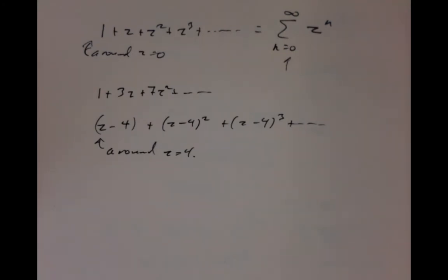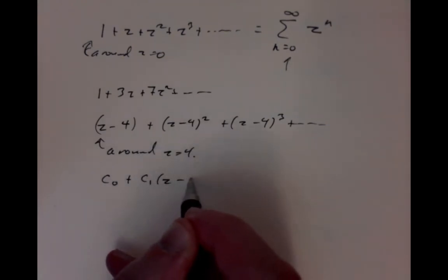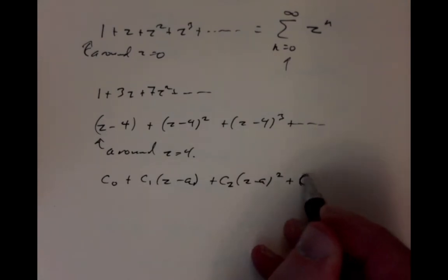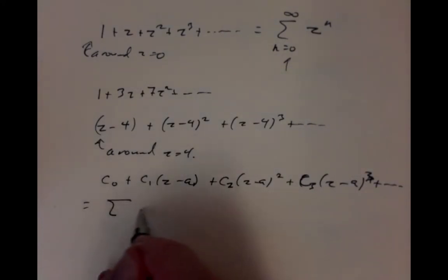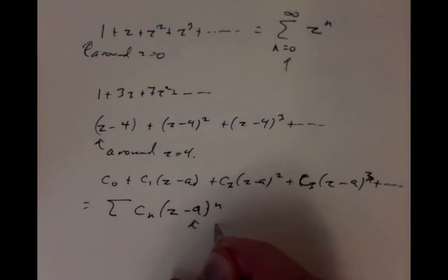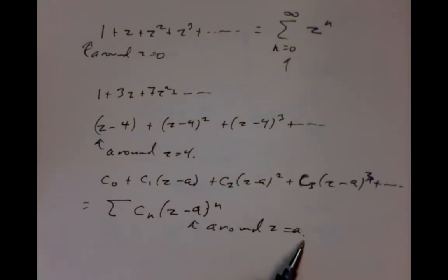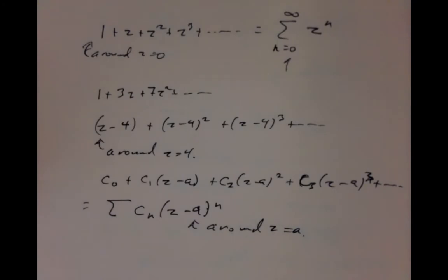In general, we're interested in sums that look like a constant term, a (z minus a) term, a (z minus a) squared term, a c3 times (z minus a) cubed term, and so on. That's expressed as a sum of coefficients cn times (z minus a) to the n, expanded around z equals a. When z is close to a, then (z minus a) is close to 0, its high powers are very close to 0, and we'd expect only a few terms to give a good approximation.